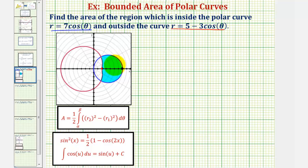To find this bounded area, we'll be using this formula here, where r sub two would be the outer radius and r sub one would be the inner radius. But to find the limits of integration, we'll have to determine the angles where these two curves are equal to each other, which would occur at this point and this point.